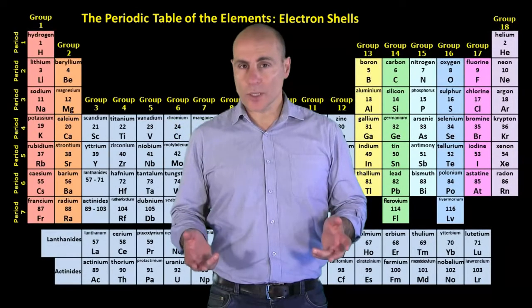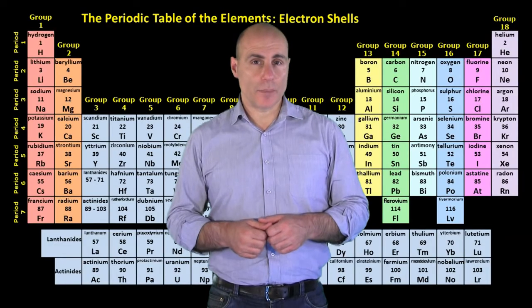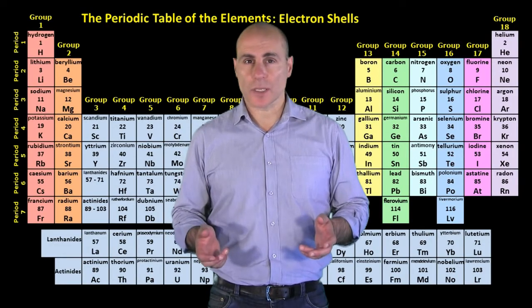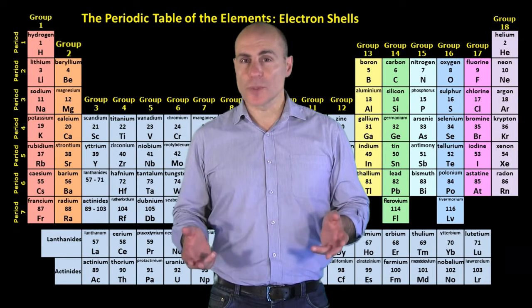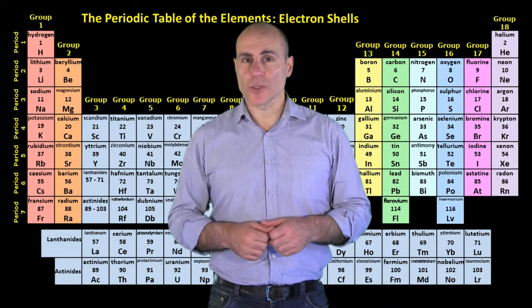Now, probably more importantly, there's another pattern involving the periodic table and electron shells, and it has to do with the arrangement of the elements into groups, that is, into the table's vertical columns.